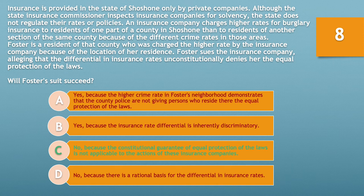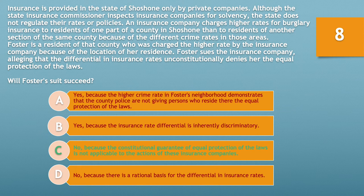Option B — yes, because the insurance rate differential is inherently discriminatory — cannot be correct because this is a constitutional claim and the 14th Amendment does not apply to private actors. Option D — no, because there is a rational basis for the differential — fails because the rational basis distinction is only applicable to state actors defining a law. Since the actor here is a private company, the 14th Amendment is simply not applicable. As a result, only option C is potentially applicable and all three other options do not apply.